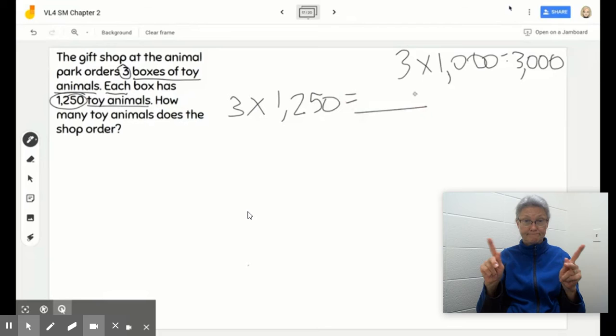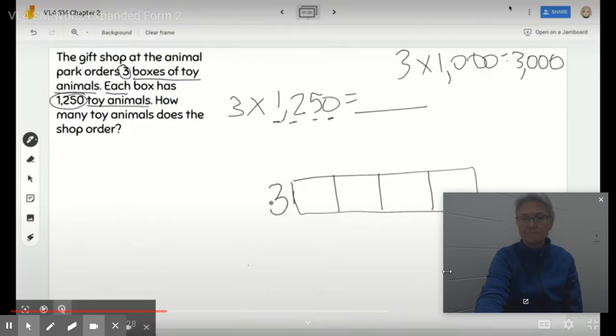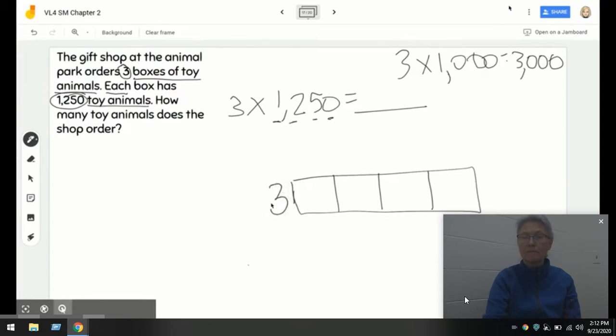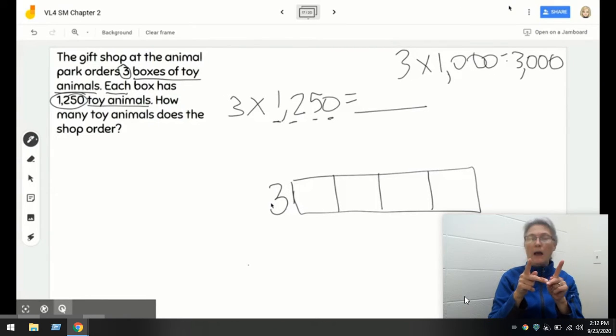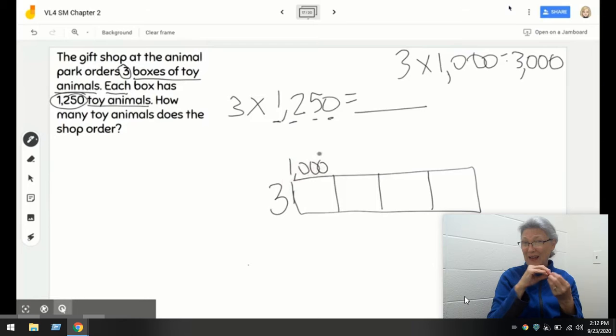Looking at that and thinking about expanded forms and also thinking about the area model, what I see right here is that we have 4 places. We're in the thousands. So, I'm going to go ahead and just draw my box and I need to have 4 places. I'm going to be multiplying each place by the factor 3.